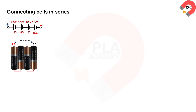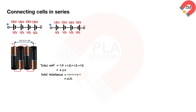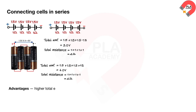Connecting cells in series. Each cell has an EMF of 1.5 volts and a resistance of 1 ohm. With four cells connected in series, the total EMF is 1.5 plus 1.5 plus 1.5 plus 1.5 equals 6 volts, and the total resistance is 1 plus 1 plus 1 plus 1 equals 4 ohms. If one cell is reversed, the EMF of two cells is cancelled, giving a total EMF of 3 volts, while the total resistance remains 4 ohms. The advantage is higher total EMF; the disadvantage is higher total resistance, causing shorter battery life.